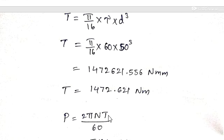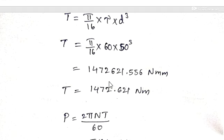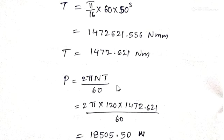Substituting the given values — permissible shear stress of 60 newton per mm square and diameter of 50 mm — and simplifying, we get the torque as 1,472,621.556 newton mm. We need to substitute this torque in the power formula in newton meter, so converting by dividing by 1000, we get T = 1472.621 newton meter.